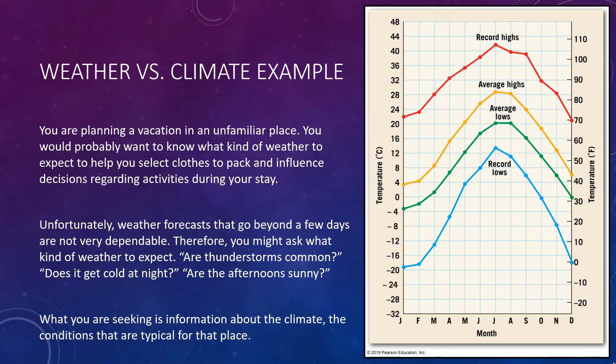For example, this graph on the right shows the average daily high and low temperatures for each month, as well as extremes for New York City. It is important to realize that climate data cannot predict weather.